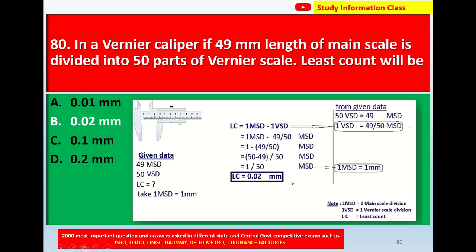Note: MST = one main scale division, VST = one Vernier scale division, LC = least count. For question number 80, the least count of the Vernier caliper is correct answer option B: 0.02 millimeter.